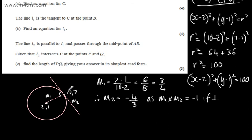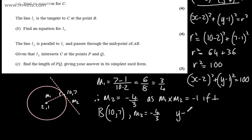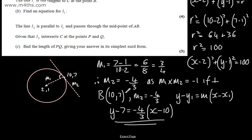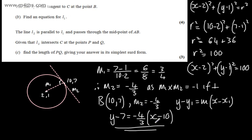We have a gradient M2 = −4/3 and the point B(10, 7) that the tangent passes through. Using y − y₁ = m(x − x₁), we get y − 7 = −4/3 × (x − 10). That is our equation for L1. We're not asked for it in any specific form, so we can leave it like that.